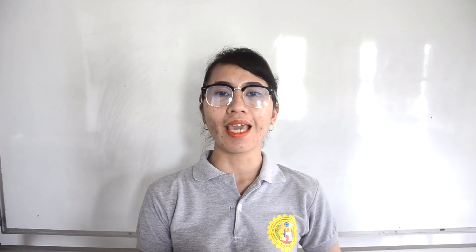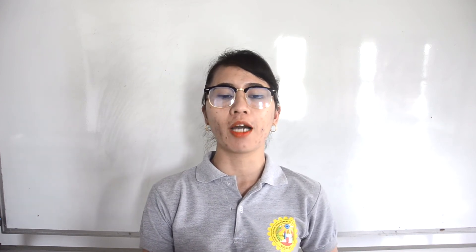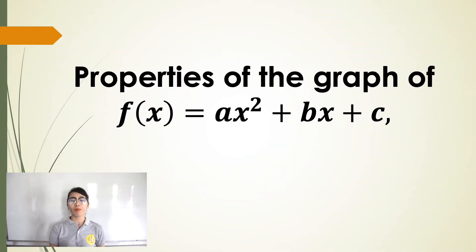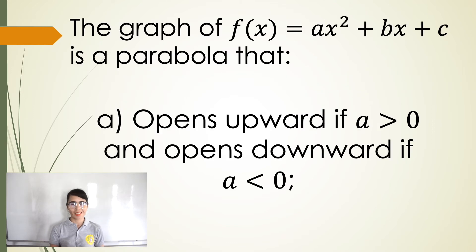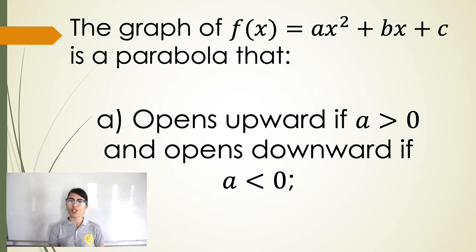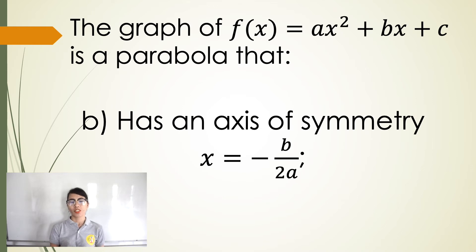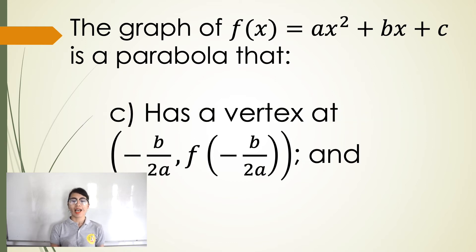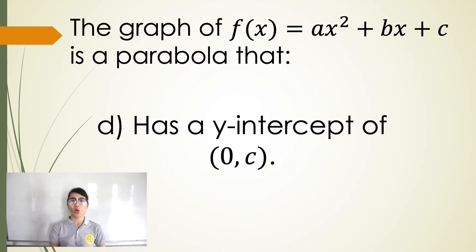Note that the coefficients a, b, and c provide useful information about the graph of a quadratic function. Here are the properties of the graph of f of x equals ax squared plus bx plus c. The graph is a parabola that opens upward if a is greater than zero, and opens downward if a is less than zero. It has an axis of symmetry at x equals negative b over 2a, a vertex at negative b over 2a and f of negative b over 2a, and a y-intercept of c.